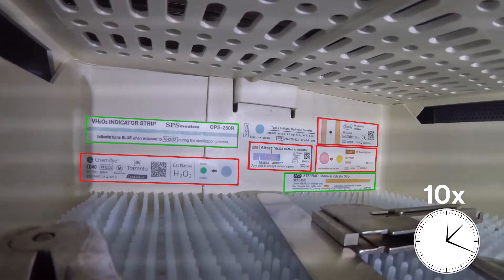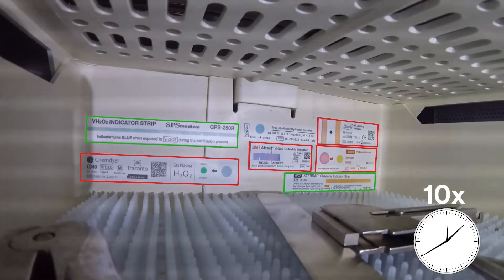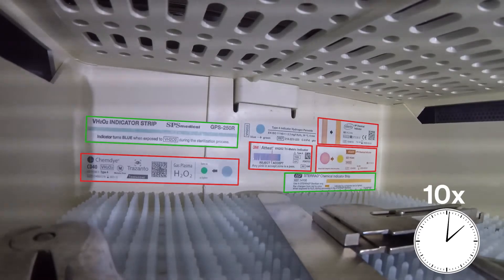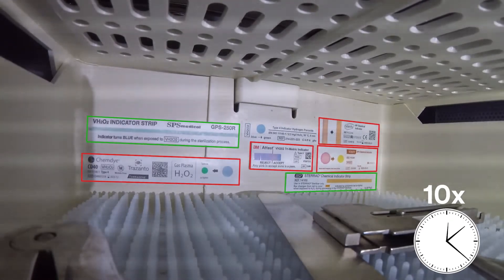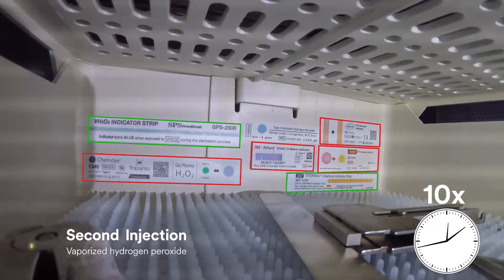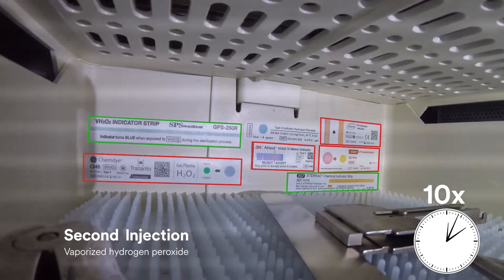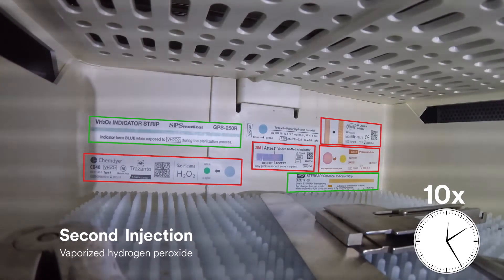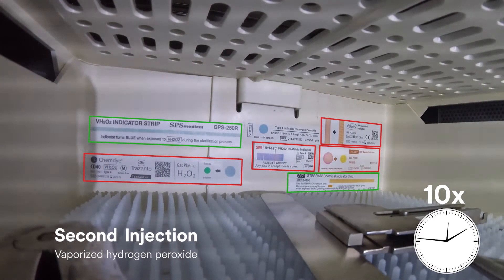After the first VH202 exposure is complete, the sterilizer proceeds through several stages to prepare for the second injection of VH202. The second injection of vaporized hydrogen peroxide is dispersed throughout the tray.